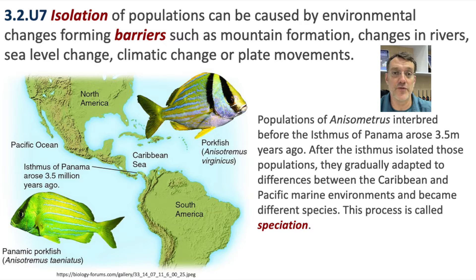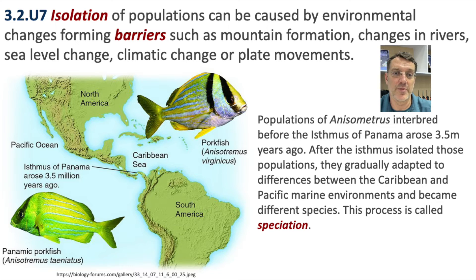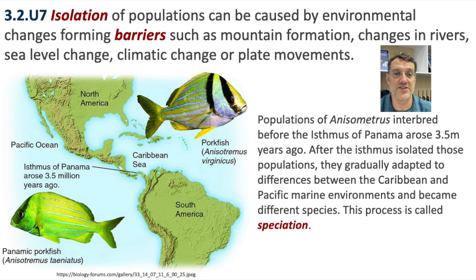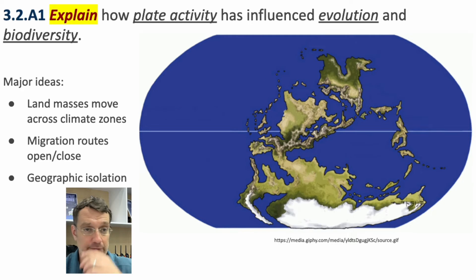This changed ocean currents and the environment in the Caribbean compared to the Pacific. Over many generations, the pork fish split from the panamic pork fish. These used to be one species, but after the appearance of the Central American peninsula, the two populations could no longer interbreed and eventually became totally separate species — though they are related and still share the same genus.